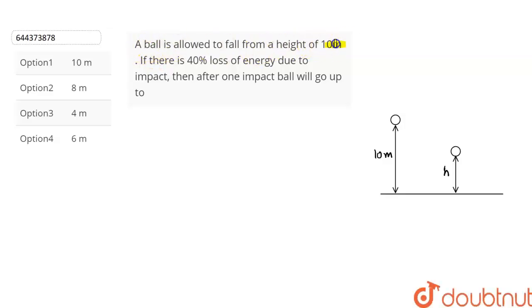The question is: a ball is allowed to fall from a height of 10 meters. If there is a loss of 40 percent energy due to the impact, then after the impact the ball will go up to - and we are given four options from which we have to choose the correct option. Let's find out.